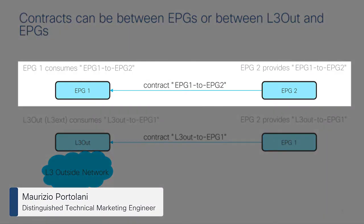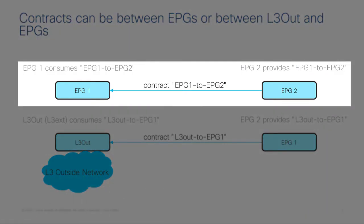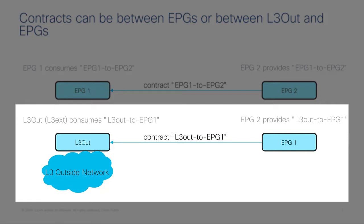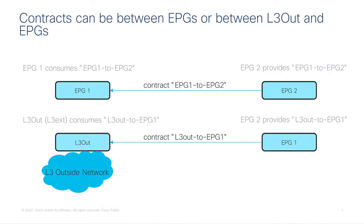Contracts can be between EPGs to allow traffic between endpoints connected directly to the ACI fabric, where these endpoints are in different security groups — so different EPGs — but it can also be between the layer 3 out and EPGs. The layer 3 external, or layer 3 instp as it's called in the object model, is the configuration that allows you to classify external networks traffic into a security zone. With contracts, you can define which external IP addresses or subnets are allowed to talk to servers directly connected to the ACI fabric.